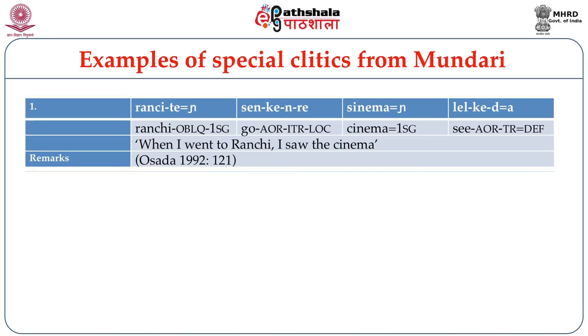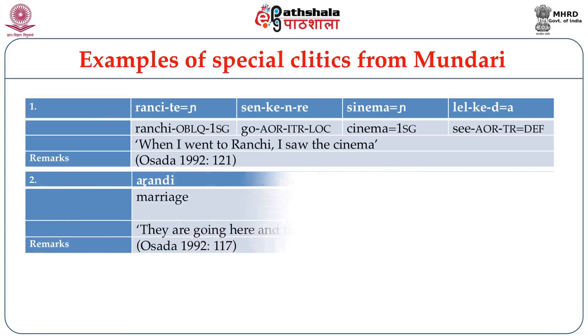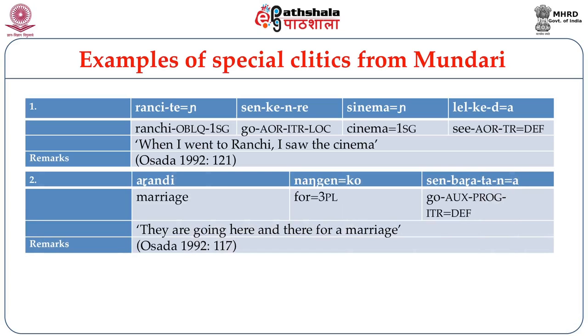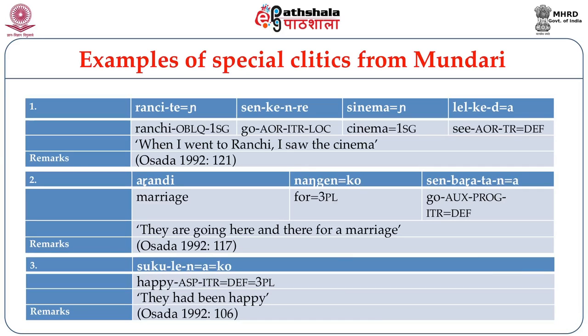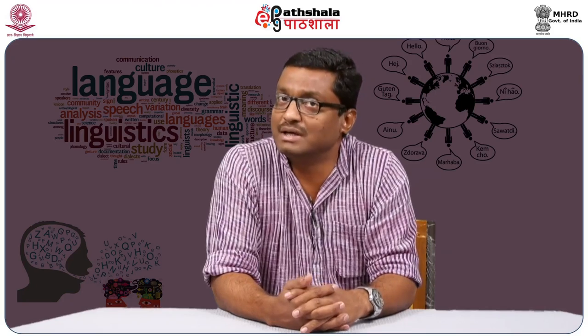In the Mundari examples on your screen, you can see that the agreement marker for 'I' appears not on the verb itself but on a preceding element like a locative or another word before the verb. In the second example — 'they are going here and there for a marriage' — the agreement marker for 'they' is hosted by a preposition, not a noun. In the third example, the agreement marker is hosted by the verb itself. So depending on the situation, the agreement marker may not appear on the verb but usually appears in the vicinity of the verb — either on it or on the word immediately preceding it. The independent personal pronoun, by contrast, is not bound to appear in the vicinity of the verb.